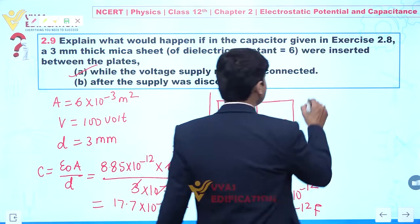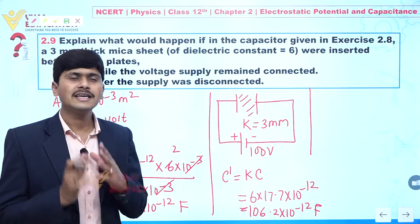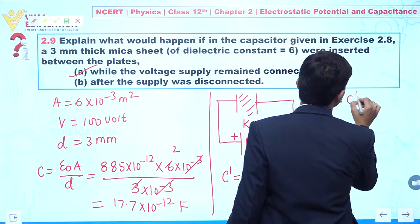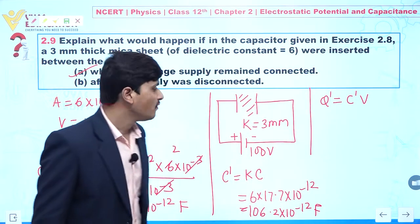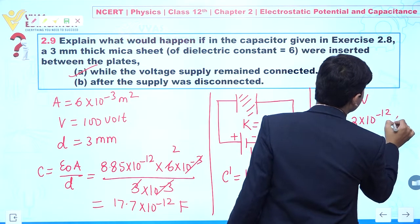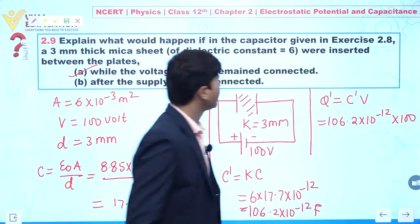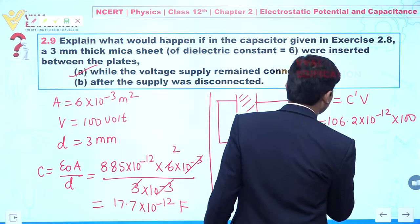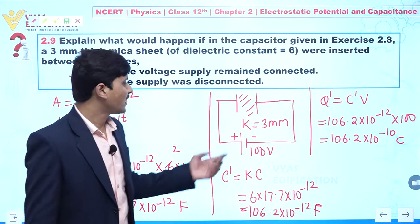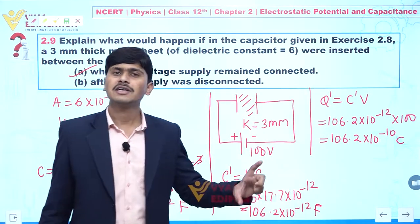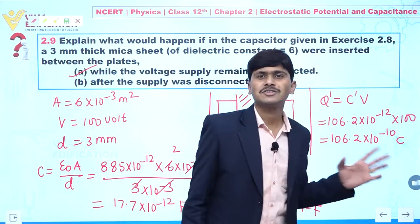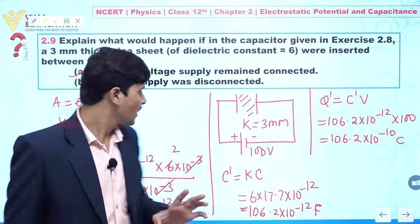Is there any change in the value of charge on the parallel plate capacitor? Yes. Q' = C' × V = 106.2×10⁻¹² × 100 = 106.2×10⁻¹⁰ coulomb. So when the battery remains connected, the potential remains the same, but the value of capacitance increases and the value of charge also increases.